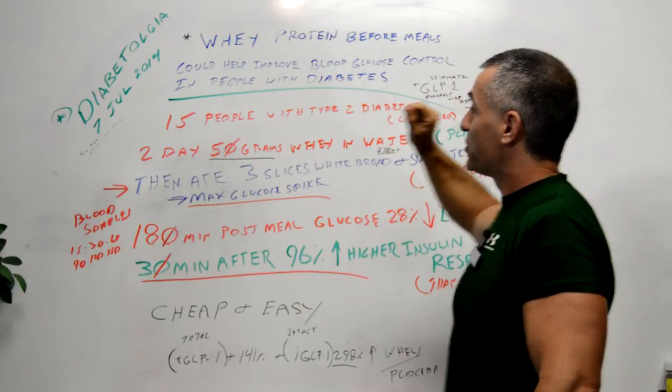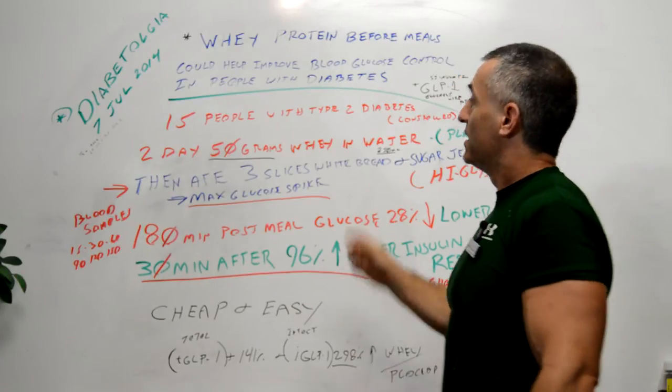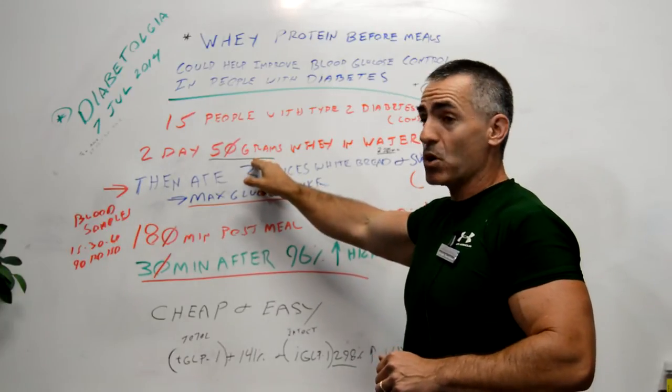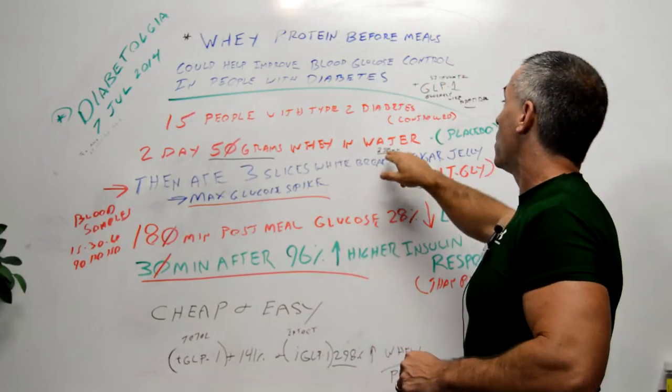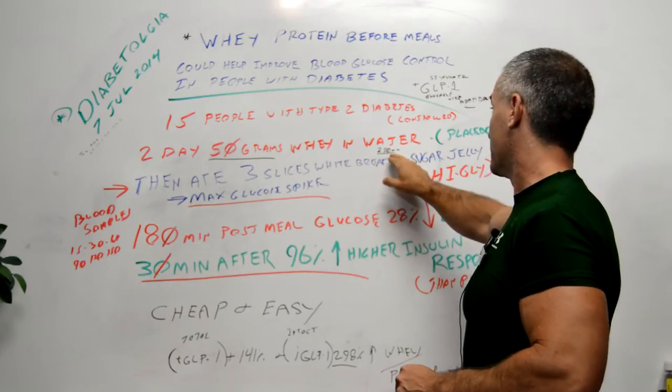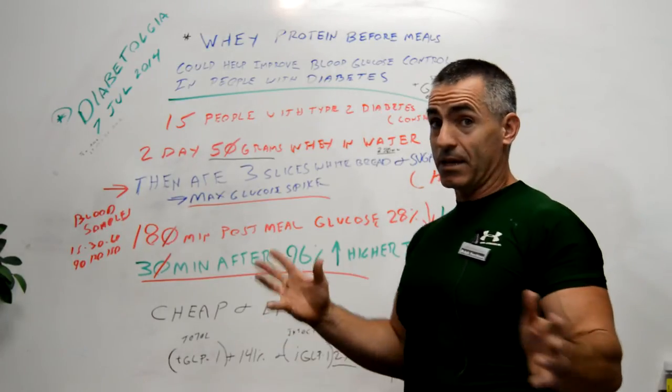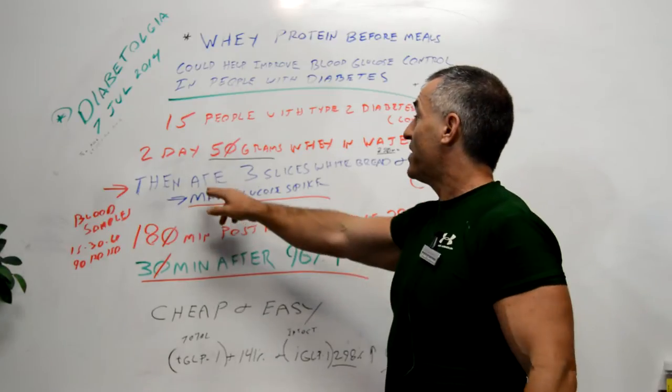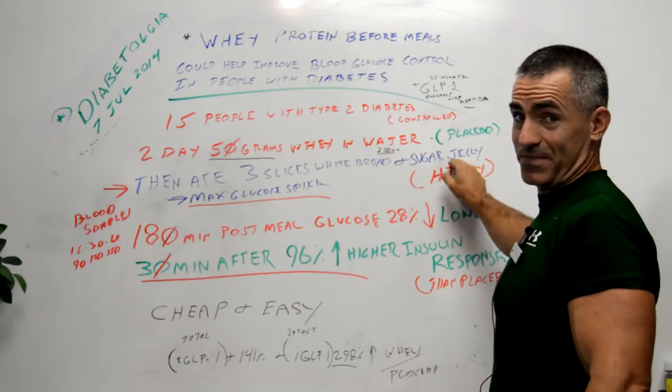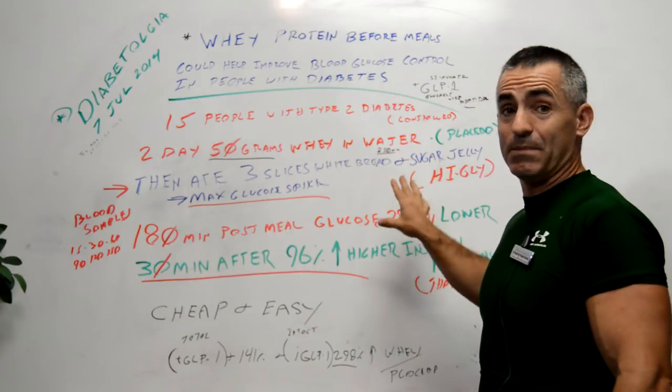So what they did is they took 15 people with well-controlled diabetes, and for two days gave them 50 grams of whey protein in 250 milliliters of water, which is not a lot of water when you consider. They also did it with placebo at the same time. Then they tried to basically kill the diabetics by feeding them three slices of white bread with sugar jelly. What they were trying to do is get a max glucose spike by giving them some very high glycemic index foods.